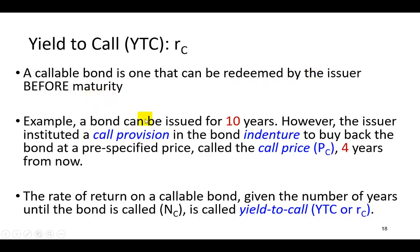For example, let's say a bond is issued for 10 years. However, the issuer of that bond, it could be the firm selling the bond or the government entity, has instituted what's called a call provision in the bond agreement called indenture to buy back that bond at a pre-specified price, which is called a call price, four years from today.